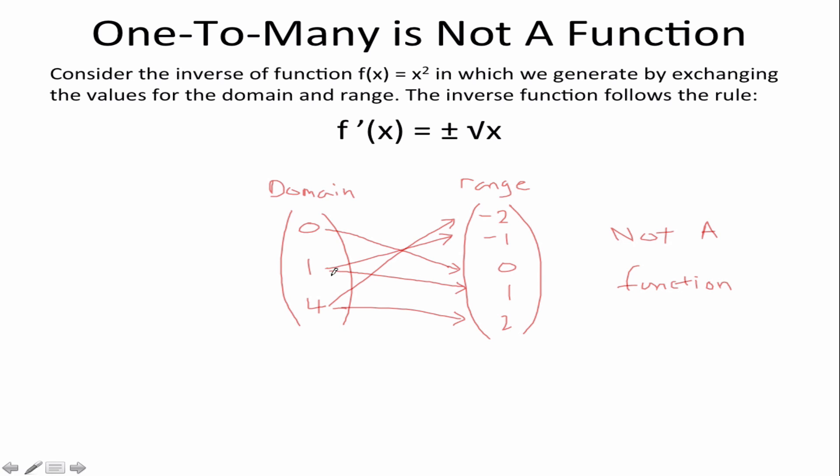Simply because you cannot have more than one output. The machine can only generate one output but in this case you have two outputs for singular inputs.